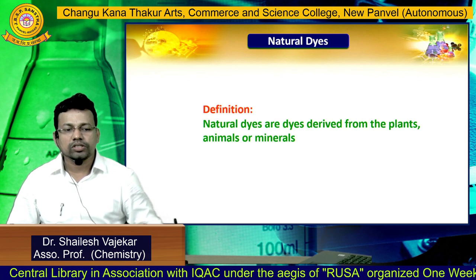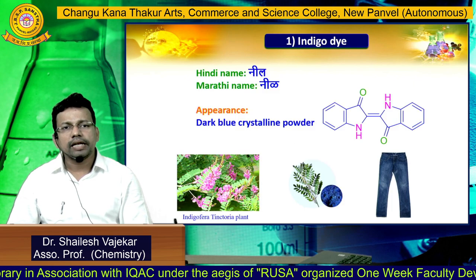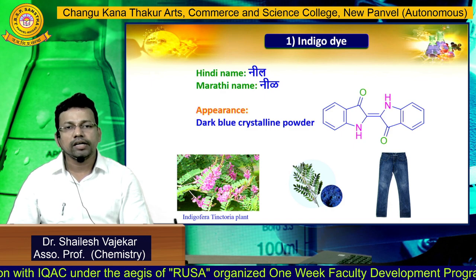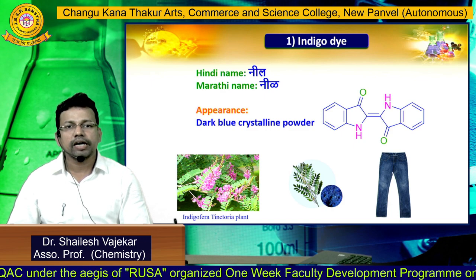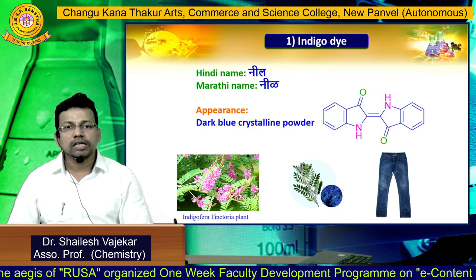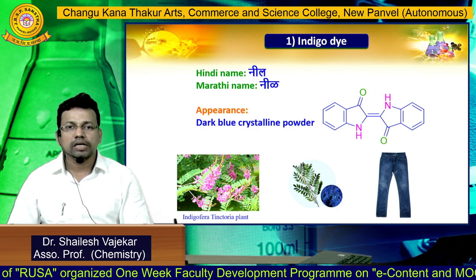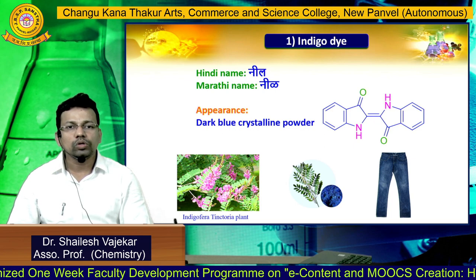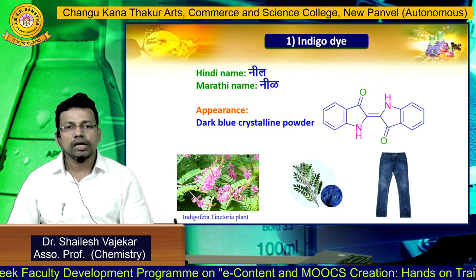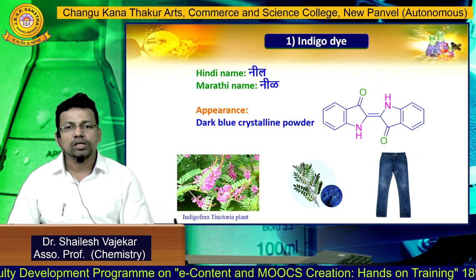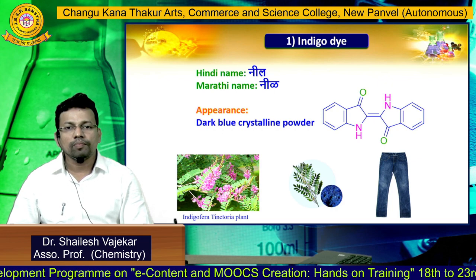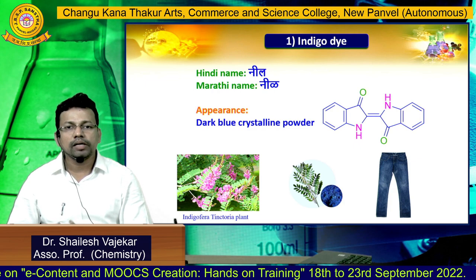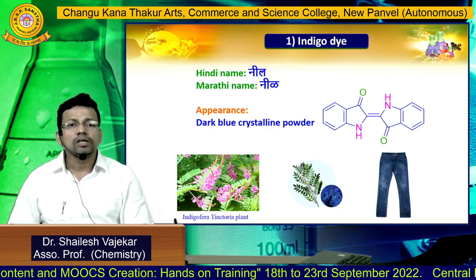The first natural dye we are going to discuss is indigo dye. It is a very well-known and famous dye. The Hindi and Marathi name for this is 'Nil.' The appearance of this dye is a dark blue crystalline powder. It has a highly symmetrical structure and is obtained from the Indigofera tinctoria plant, which is widely available in our country.